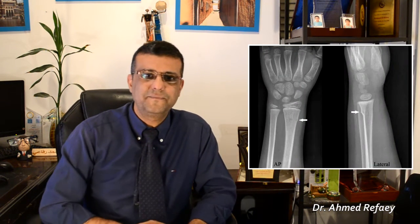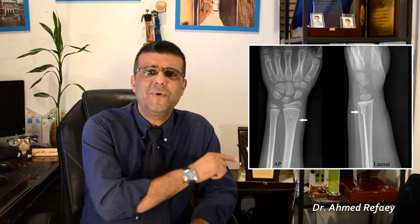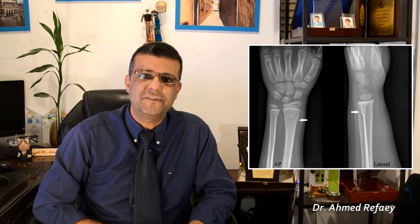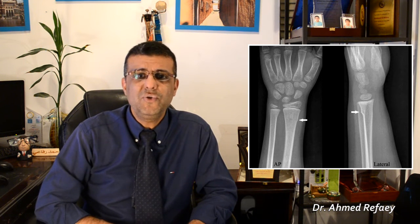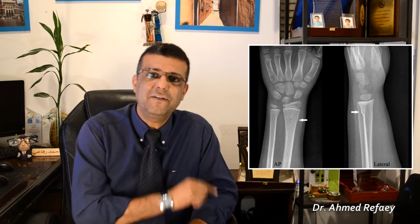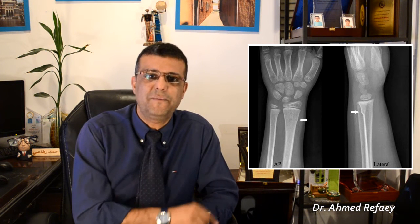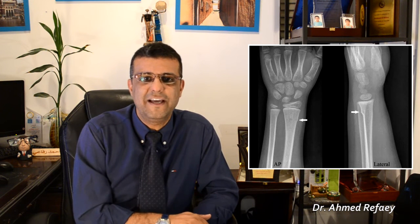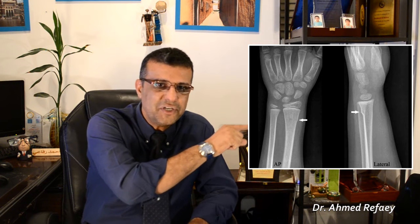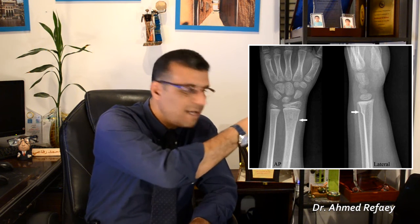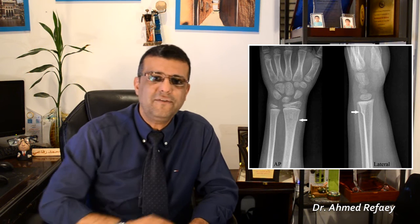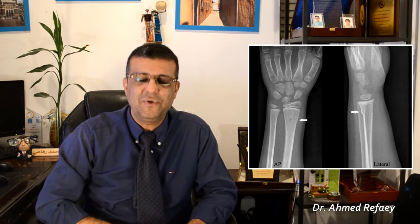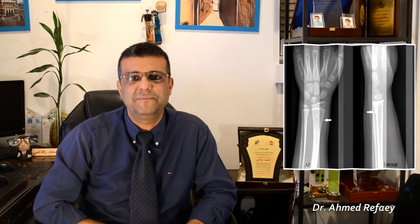Case number six is one of the easily missed fractures — the torus fracture. It is usually very difficult to appreciate in the frontal projection, and better detected in the lateral projection in the form of angulation or bulging of the cortex as you can see here. It is an incomplete fracture, also known as a buckling fracture.